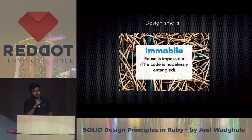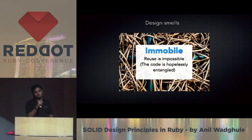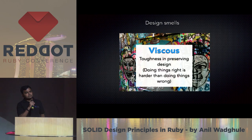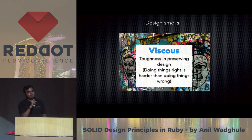Third is immobile — whatever you write should be reusable. If your code is hopelessly entangled, that makes your application immobile. Fourth is viscous — even if you have good design, if it's very easy to add hacks rather than follow good design, your application is viscous.